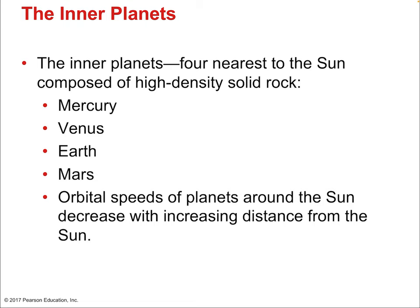The inner planets include Mercury, Venus, Earth, and Mars — four rocky planets composed of high-density solid rock. The orbital speeds of planets around the sun decrease with increasing distance: Mars moves slower, Earth a little faster, Venus the fastest of the inner planets. The gas planets are even further away and moving even slower still. Orbital speeds are on the order of 25,000 meters per second, but decreasing with distance.